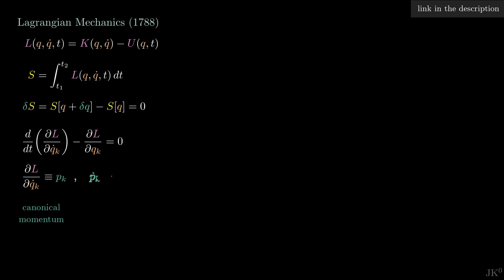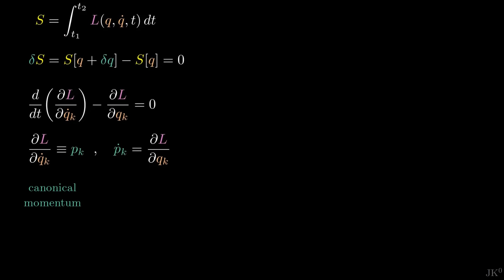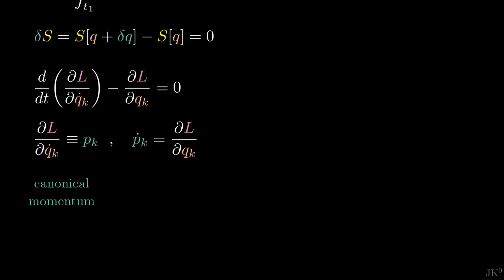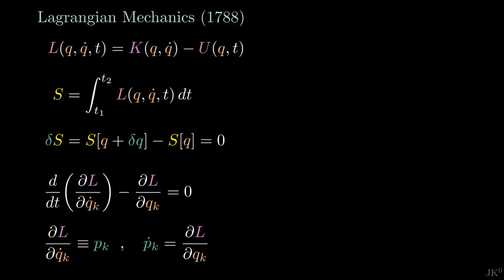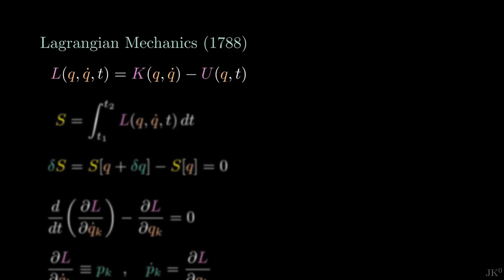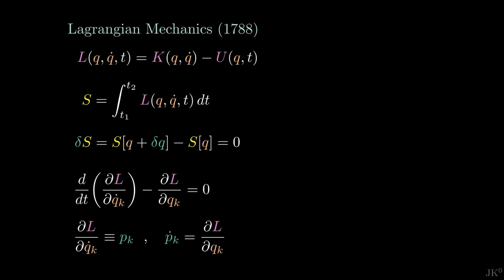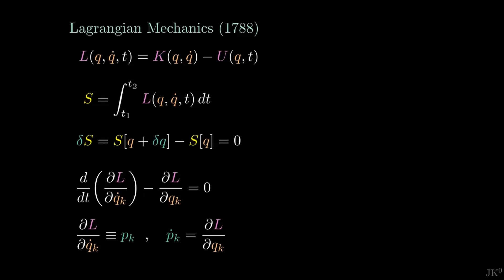Defining the canonical momentum in this way, the Euler-Lagrange equation takes this more compact form. This canonical momentum coincides with the linear momentum for systems of mechanical particles, but they are not necessarily the same. It is important to notice that the Lagrangian depends on q and q-dot. In the end, the evolution of each degree of freedom of the system is determined by this single second-order equation for q.